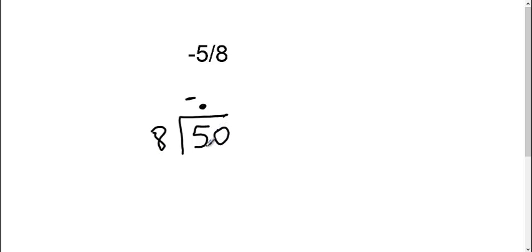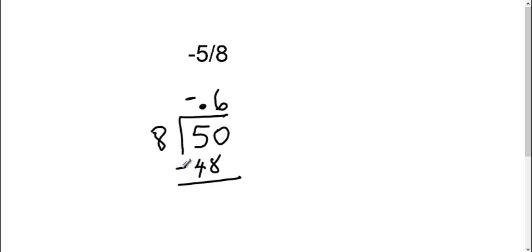8 goes into 50 six times. 6 times 8 is 48. We are subtracting here. So 50 minus 48, I get 2 left over. Bring down another 0 because we're going to round to the nearest hundredth, so we need to keep going.